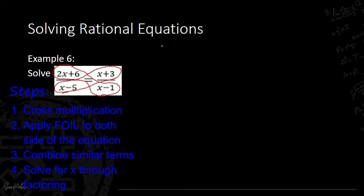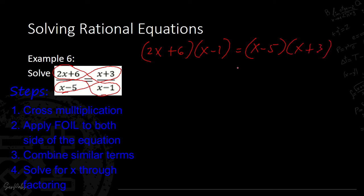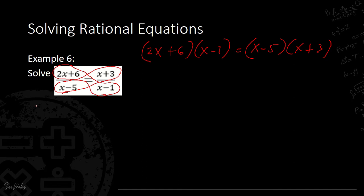Using cross multiplication, we multiply: (2x + 6) times (x minus 1) equals (x minus 5) times (x + 3). We will use the FOIL method twice — once for the left side and once for the right side of the equation.